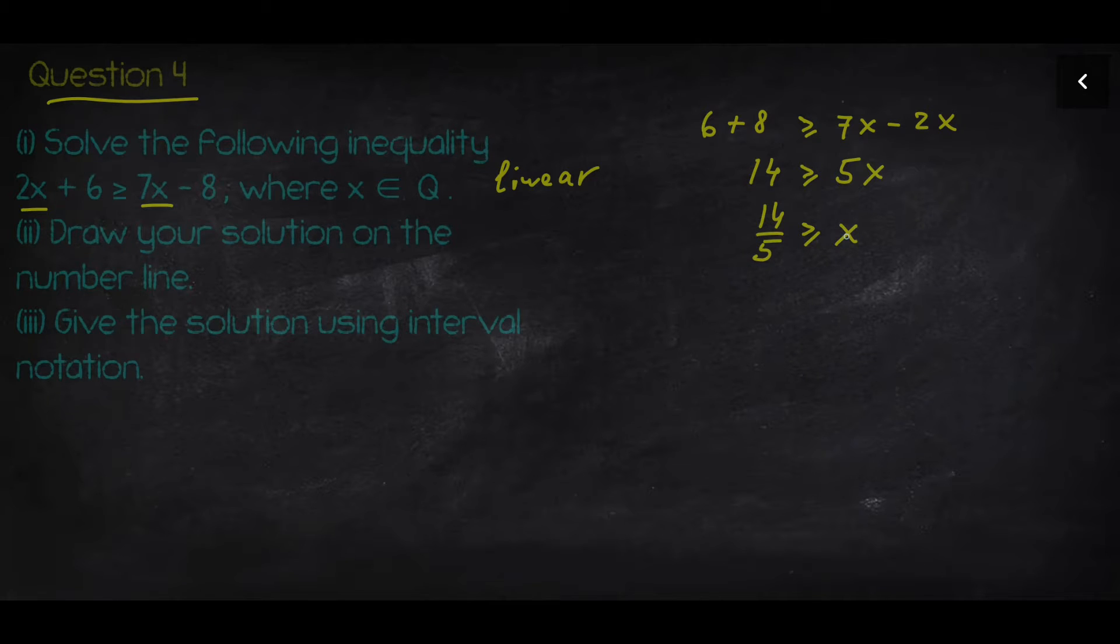So that's basically the solution, but normally we rewrite as x goes first, then you compare with the number, and the number is 14 over 5. So the solution is x less or equal than 14 over 5.